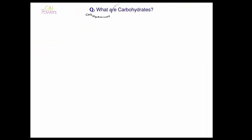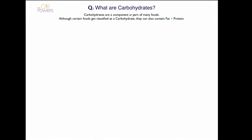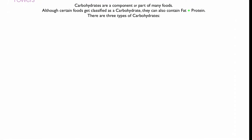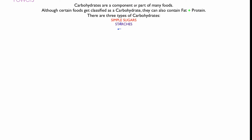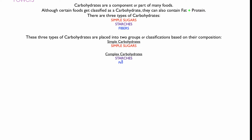What are carbohydrates? Carbohydrates are a component or part of many foods. Although certain foods get classified as a carbohydrate, they can also contain fat and protein. There are three types of carbohydrates: simple sugars, starches, and fibers. These three types are placed into two groups based on their composition. Simple carbohydrates include the simple sugars, and the complex carbohydrates include the starches and the fibers.